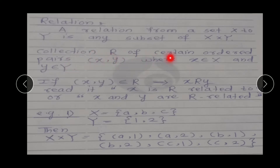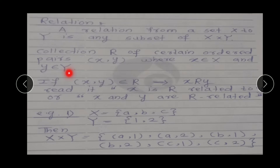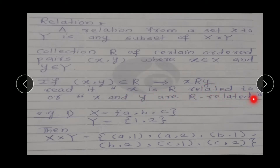A collection R of certain ordered pairs — जो हमारा relation R रहेगा उसमें हम collect करेंगे ordered pair (x, y) को — where small x belongs to capital X and small y belongs to capital Y. हमारा जो first element आएगा वो हमारे first set से, and second element जो हमारे belong करेगा वो हमारे second set से. If (x, y) belongs to R, इसे हम denote करते हैं x capital R y, और इसे हम read करते हैं: x is R related to y, meaning यहाँ पर x और y के बीच में relation है.